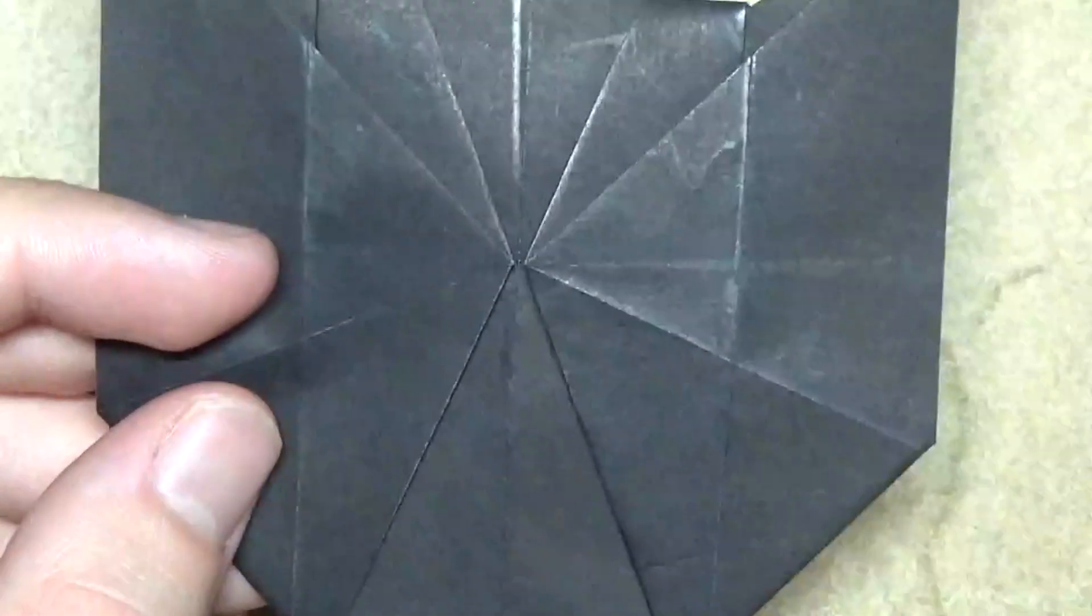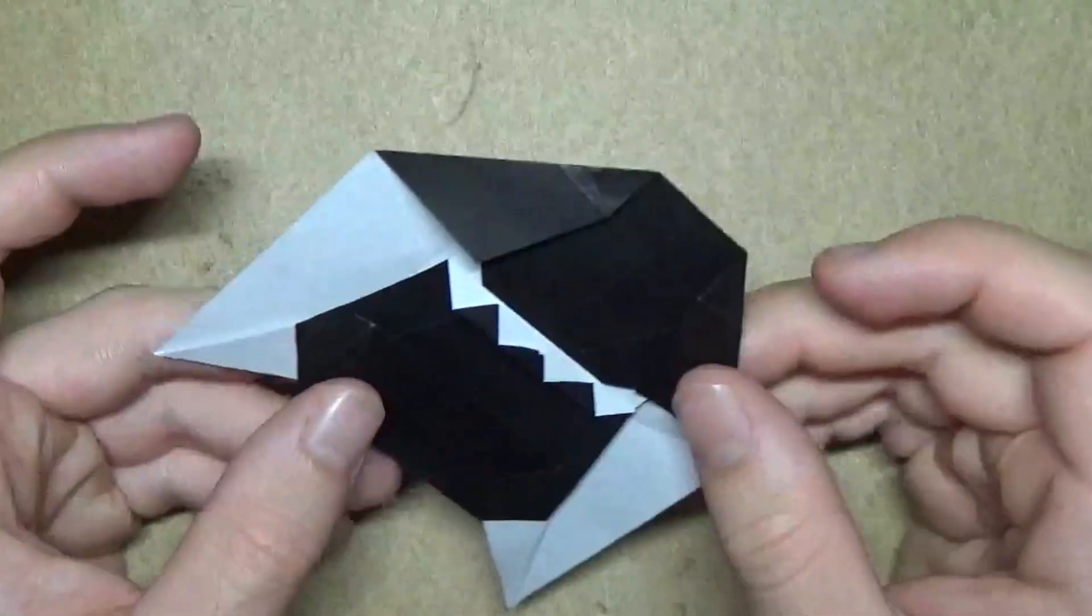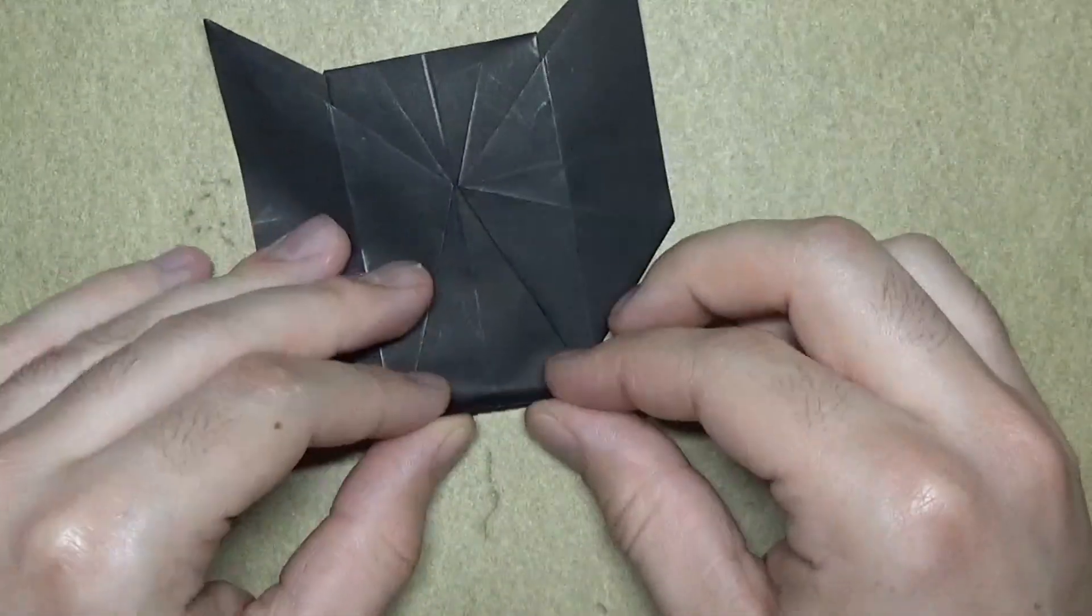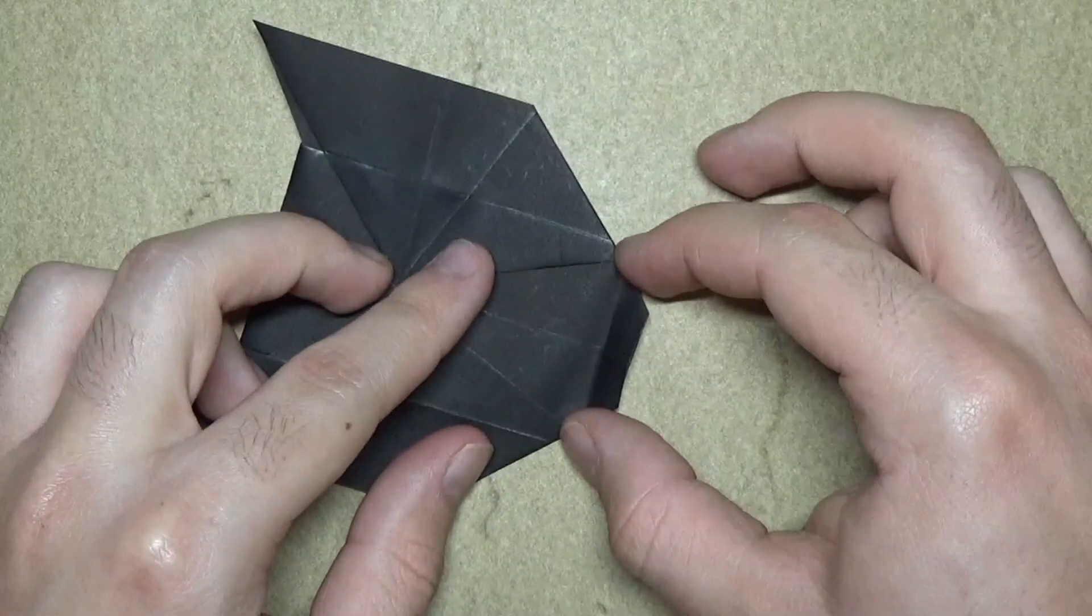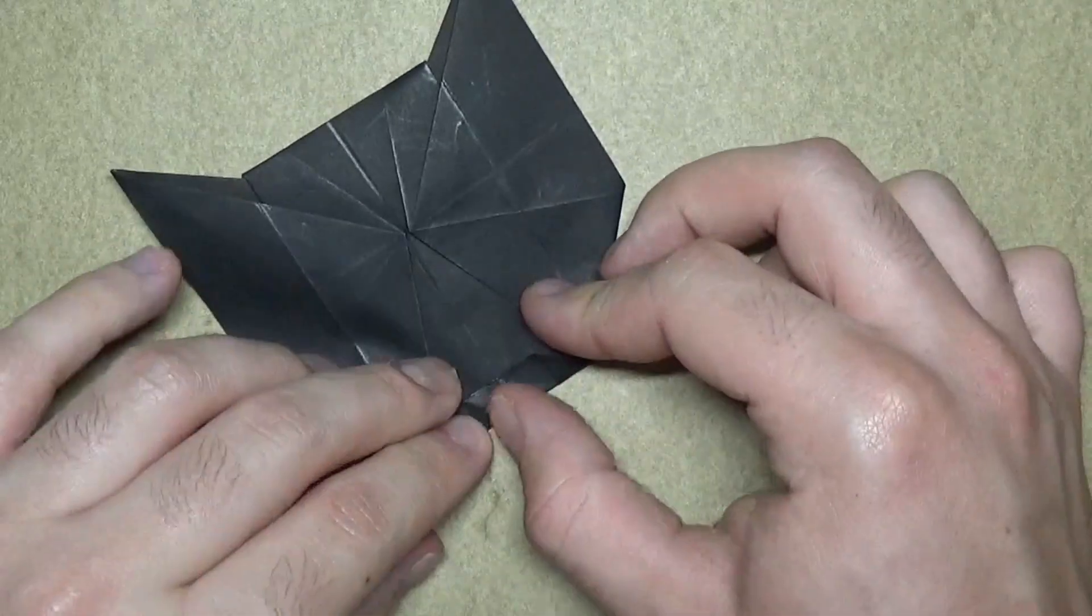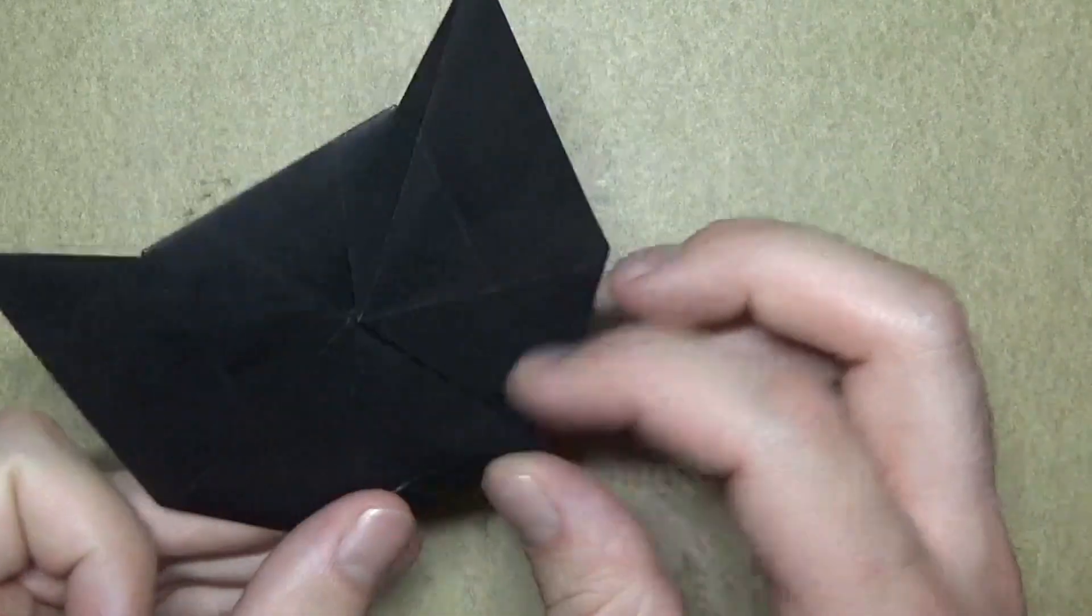Turn it over. And you might, you might like it just like this. This is a nice looking cat head. Alright. And if you want, you can fold this up. This is optional if you want a mouth. Just fold it up in between the two points. See. That just suggests a mouth. Alright. Just like that. Okay.